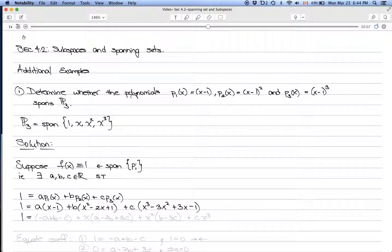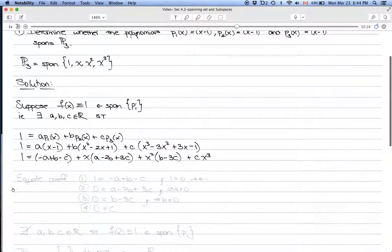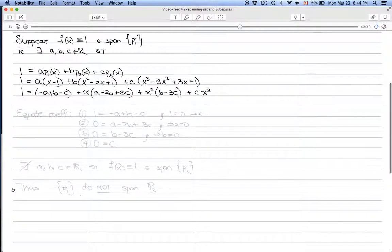Let 1 = (-a + b - c) + x(a - 2b + 3c) + x²(b - 3c) + c·x³. The left-hand side has to equal the right-hand side for every x, so we can equate coefficients.